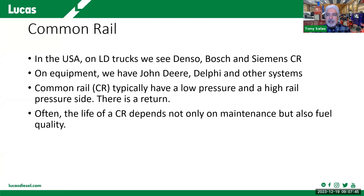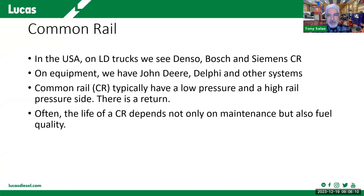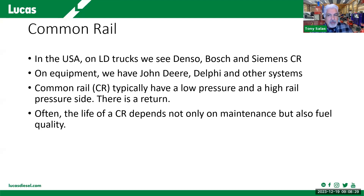Common rail pretty much dominates every diesel platform — from small little diesels to big diesels. Common rail seems to be here to stay, especially for better fuel economy, power, and to meet emissions requirements — particularly soot accumulation and NOx. We see Denso, Bosch, Siemens, and on the equipment side John Deere, Delphi, and others. Common rail is common rail — it all depends who designed it — but we typically have a high pressure pump, a low pressure feed, and all the way to the high pressure side where it's injected by the common rail injector.